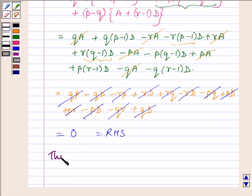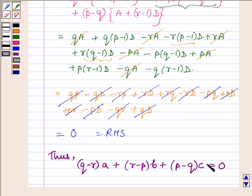And thus (q-r) into a plus (r-p) into b plus (p-q) into c is equal to 0.